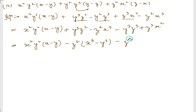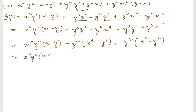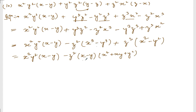From the other two terms I can take z³ common. Similarly, here I need x minus y, but if I take minus common it will be y minus x. So let me take positive, then it will be x² minus y². Now applying formulas: x³ minus y³ = (x minus y)(x² + xy + y²), and x² minus y² = (x minus y)(x + y).